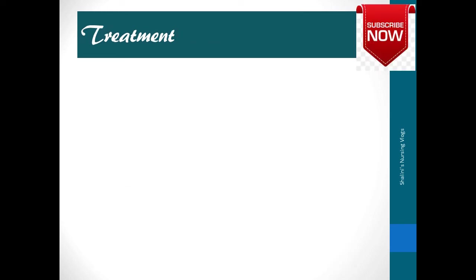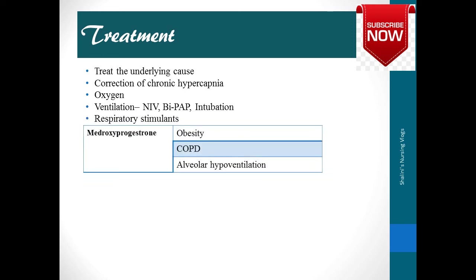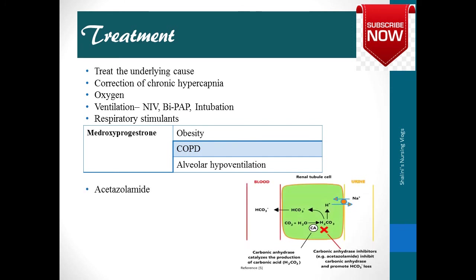Treatment for respiratory acidosis includes: treating the underlying cause; correction of chronic hypercapnia to eliminate excess carbon dioxide; oxygenation, especially in alveolar hypoventilation leading to hypoxemia; non-invasive ventilation — particularly positive pressure ventilation — and in severe cases, intubation; respiratory stimulants like medroxyprogesterone to stimulate the respiratory center, especially in obese, COPD, or alveolar hypoventilation patients; and acetazolamide, a carbonic anhydrase inhibitor, which inhibits conversion of carbon dioxide and water into carbonic acid.